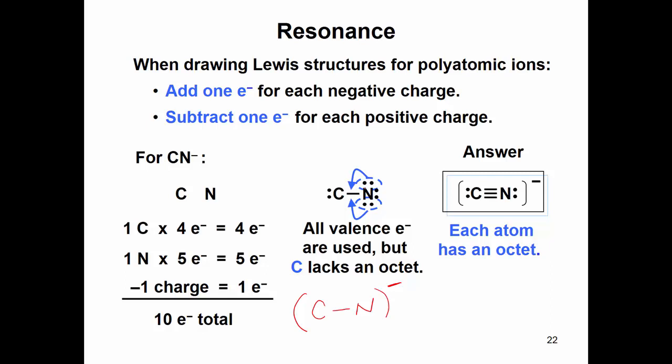So two of our lone pairs are going to come over and form two more bonds to give us a triple bond. And so instead here we have a triple bond.